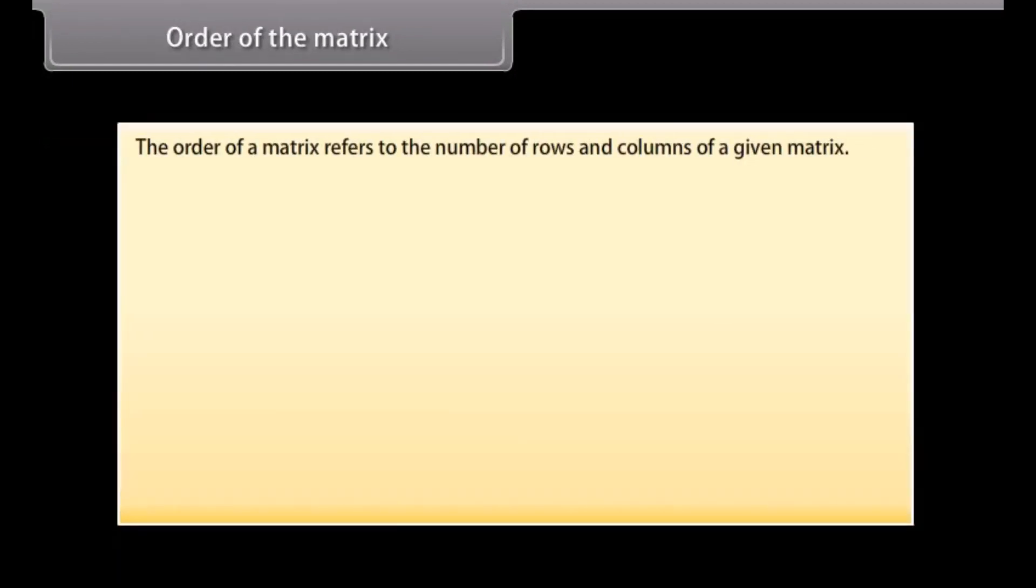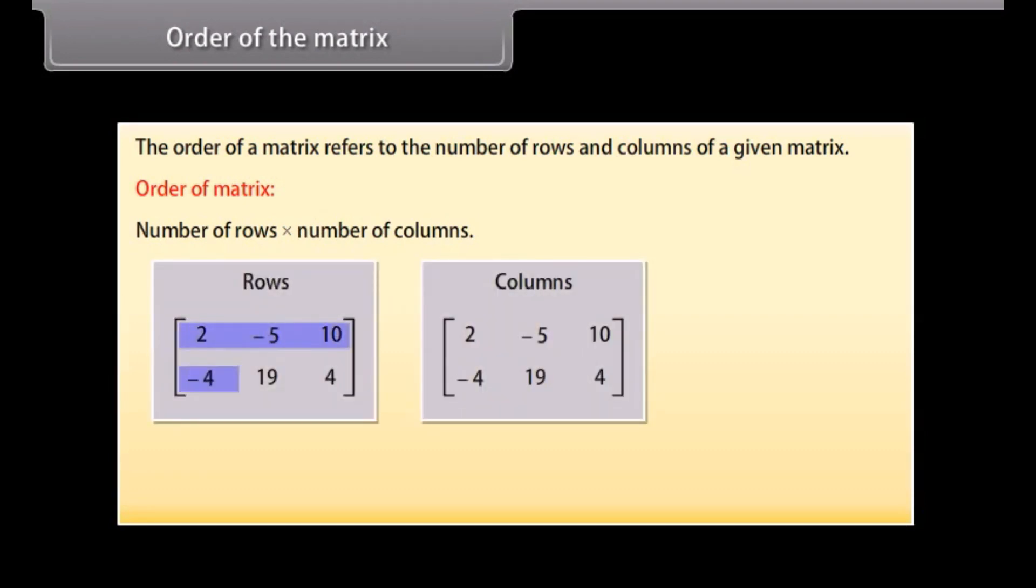Order of the matrix. The order of a matrix refers to the number of rows and columns of a given matrix. By convention, the order of a matrix is given by number of rows by number of columns. Here we can see two pictures of the same matrix with the rows and columns highlighted. The order of this matrix is 2 by 3. That is, two rows by three columns.